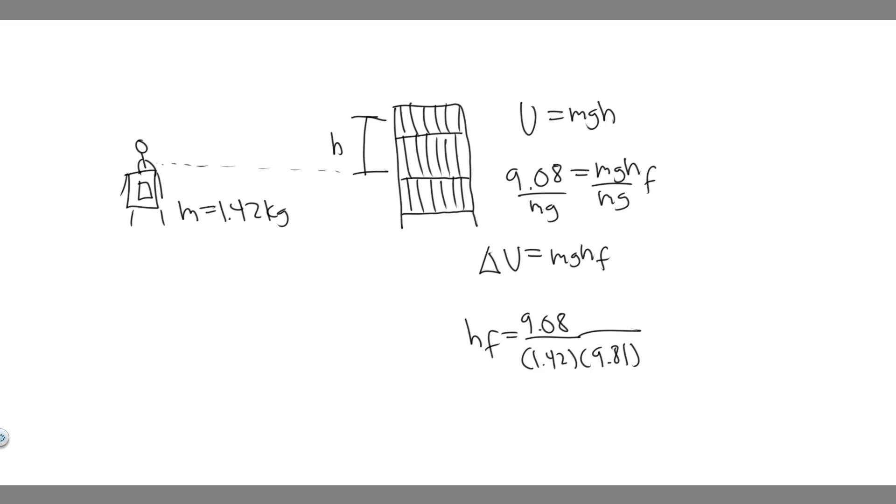Plug this in. So 9.08 divided by 1.42 times 9.81. Go ahead and do this, and what you're going to get is 0.6518. So it's going to equal about 0.65, and it's in meters because this is a distance. So it's 0.65 meters above the desk. This is your answer, and hopefully you found this useful.